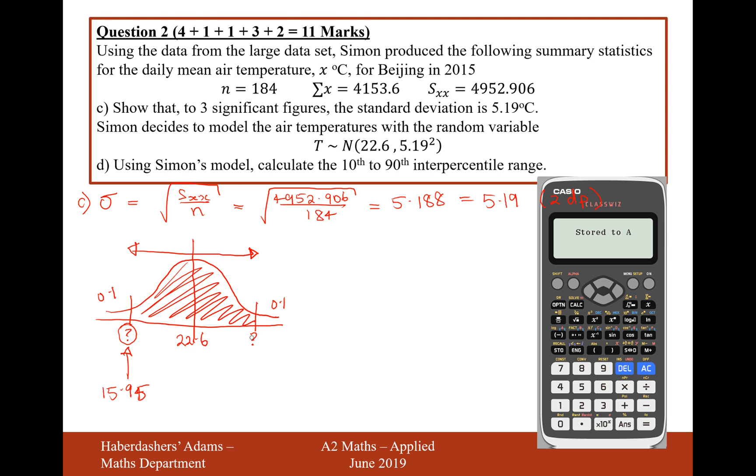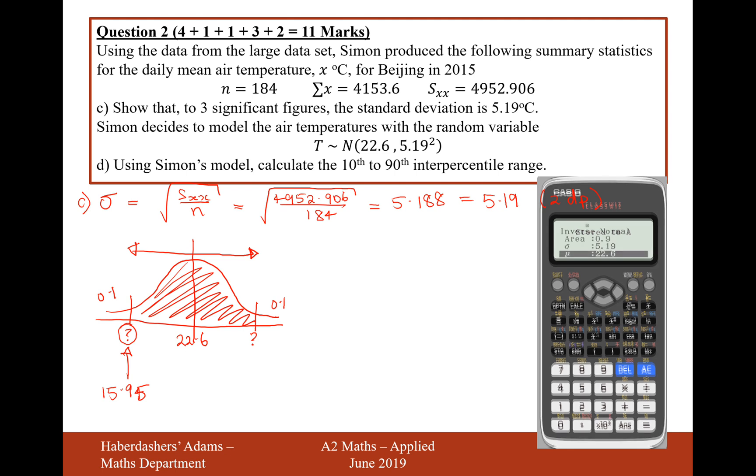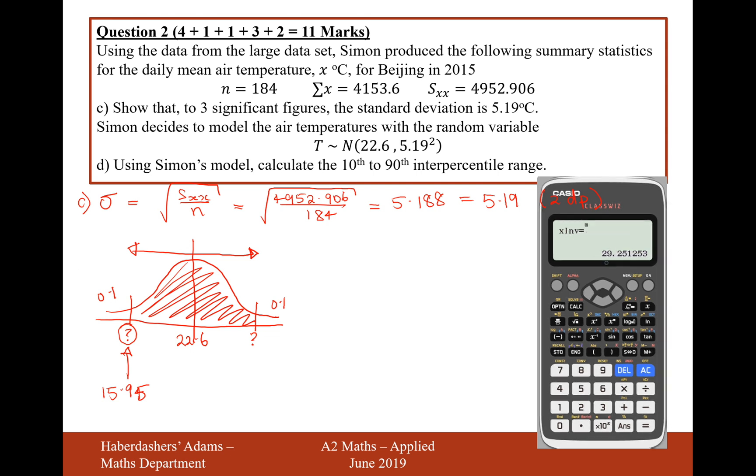Now we need to work out the other value here and then we'll do the difference between the two of them to work out the interpercentile range. So we've worked out the 10th percentile value, now let's go ahead and work out the 90th percentile value. Same variables as before but now we want a probability of 0.9 to the left, it's always the probability to the left. So let's enter that in the calculator and it's going to be 29.25.